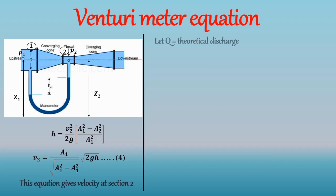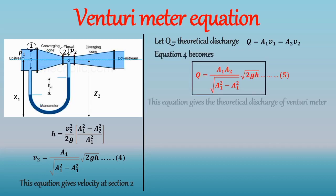Now let's calculate theoretical discharge that is Q. So we know that Q is equal to. So after putting the value of V2 in the above equation we get. This equation gives the theoretical discharge of Venturi meter. But in general actual discharge is always less than theoretical discharge. Hence we introduced coefficient of discharge to get actual discharge value.